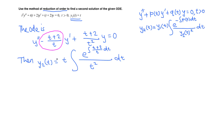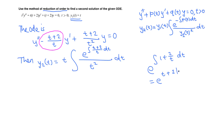Let me compute this integral separately so we don't have to copy everything else. We have e raised to the integral of (t+2)/t dt. We can split (t+2)/t as t/t + 2/t, which is 1 + 2/t. The antiderivative of 1 is t, plus 2 times the antiderivative of 1/t, which is the natural log of t — no absolute value needed since t is positive.